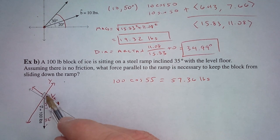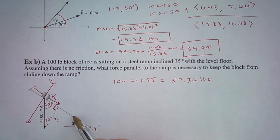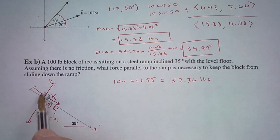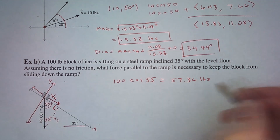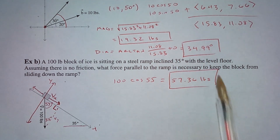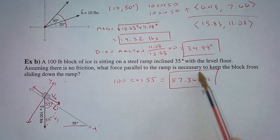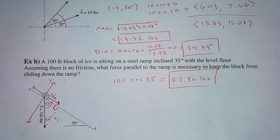This ice has 57.36 pounds of force heading down the ramp. If I apply that same amount of force going the other direction, it will stay exactly where it is. So the force necessary to keep the block from sliding down the ramp is 57.36 pounds of force.